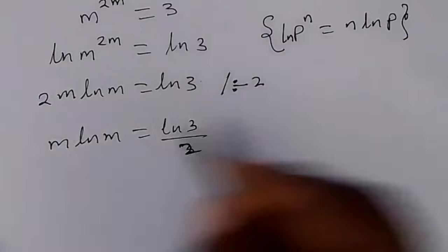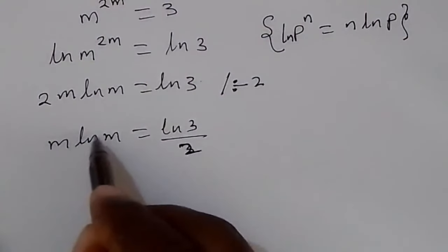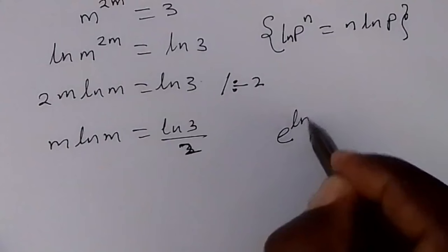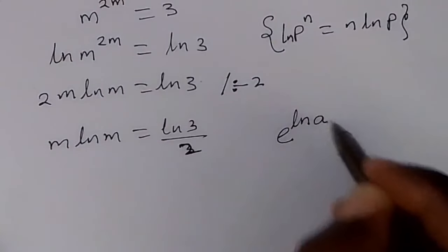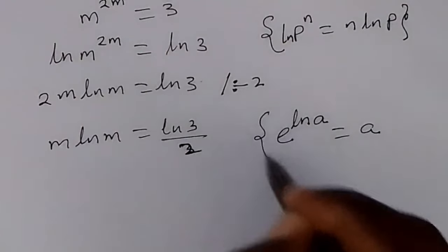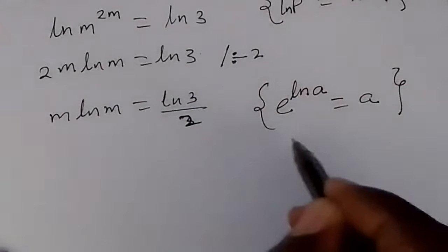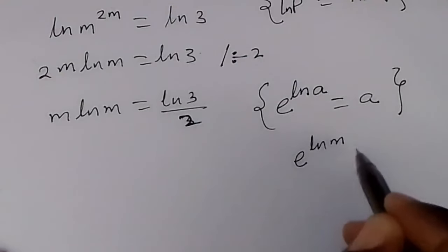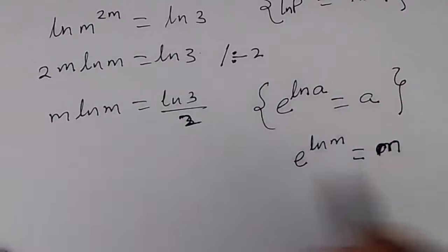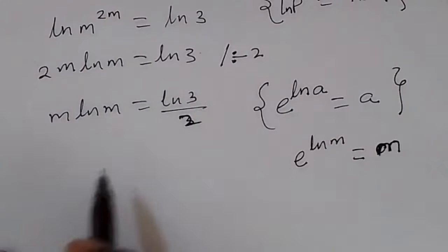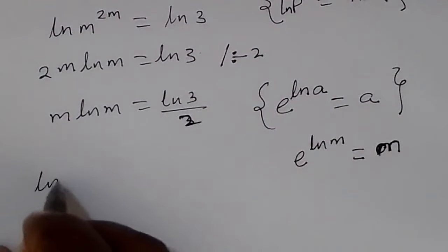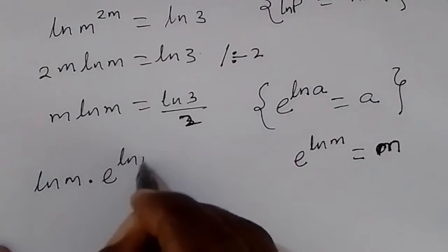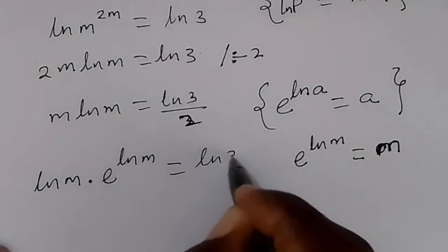Now let us apply the rule that e raised to ln(a) equals a to the coefficient m on the left. This means m becomes e raised to ln(m). Substituting, we have ln(m) times e raised to ln(m) equals ln(3) over 2.